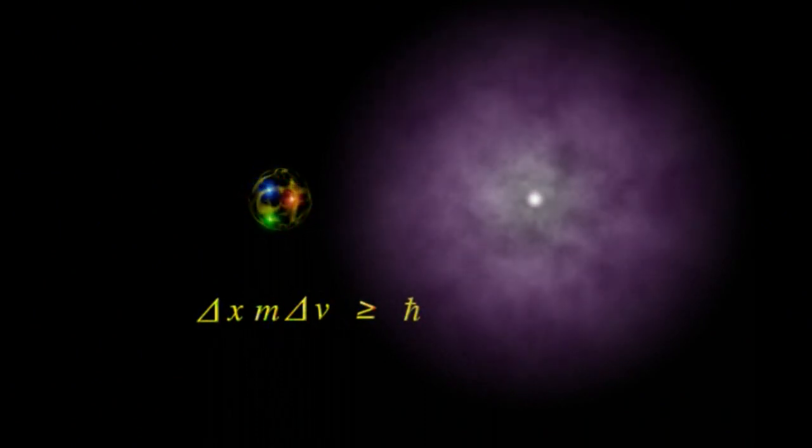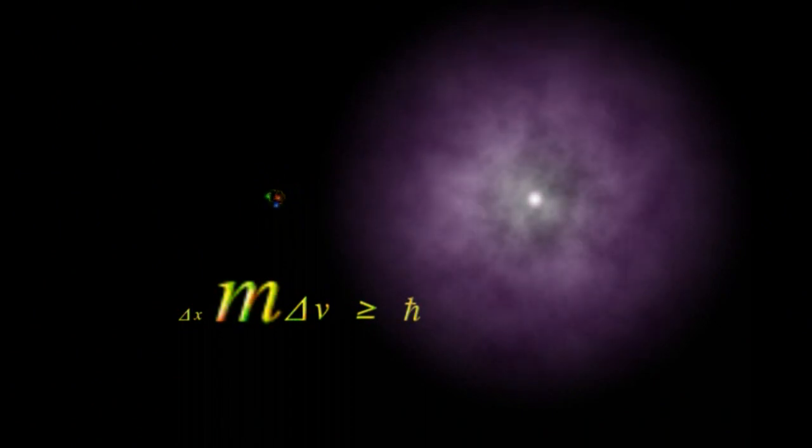Conversely, the proton has a very large mass, 2,000 times that of an electron. And therefore, it occupies a very tiny region of space.